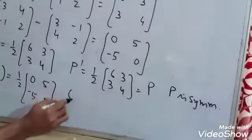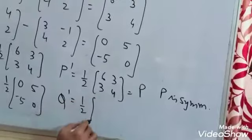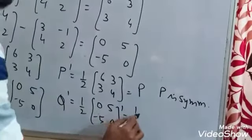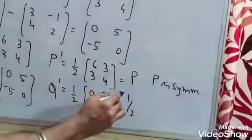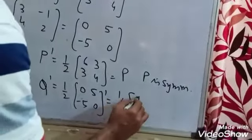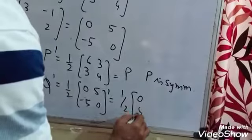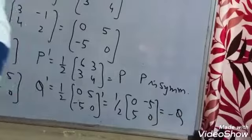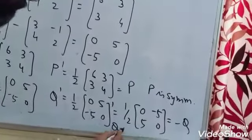What is Q transpose? Q transpose is half of [0, -5; 5, 0]. This is minus Q. So Q is skew-symmetric.